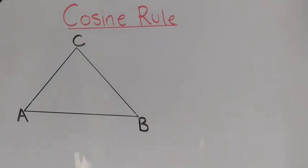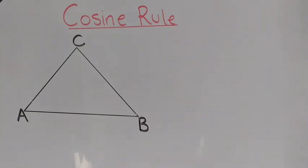This is part one of the video, and I'm going to start with the cosine rule. The cosine rule is a rule used to solve non-right-angle triangles — triangles that don't have the same sides, meaning all sides are different, and they also don't have the same angles inside.